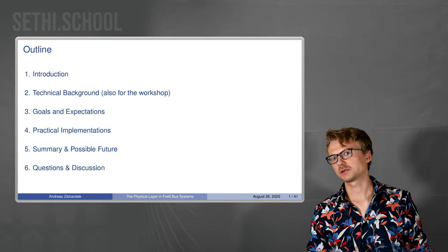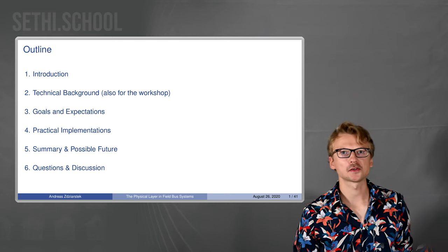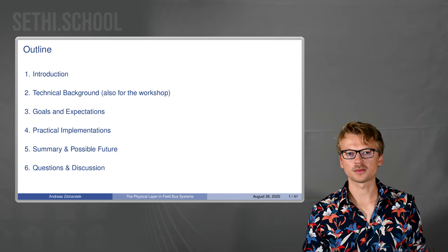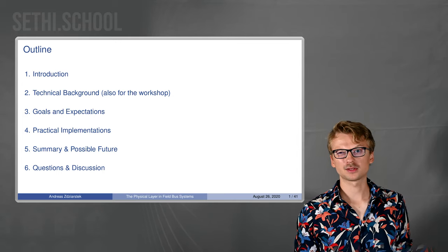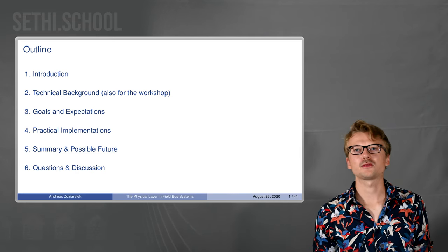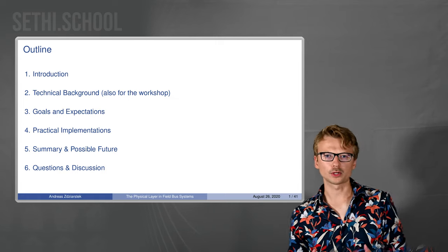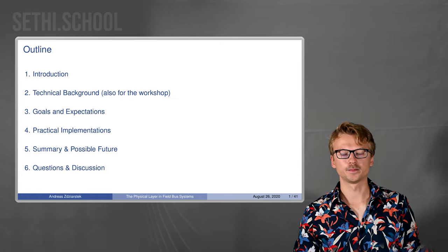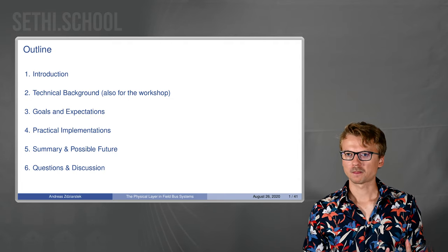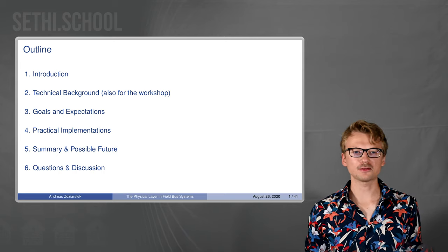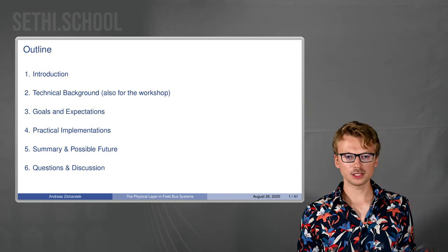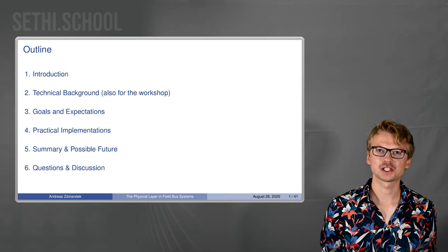It's about the physical layer and field bus systems, or more precisely how we can use it to enhance security in those systems as we are in a security summer school. So let's start with an outline. First I will give a little introduction, tell you a bit about myself, and then we'll look at some technical background stuff about electronics and signal processing. Afterwards we'll look at what we actually want to do with this scientific physical layer security stuff and how we can implement it, and then look at the future.